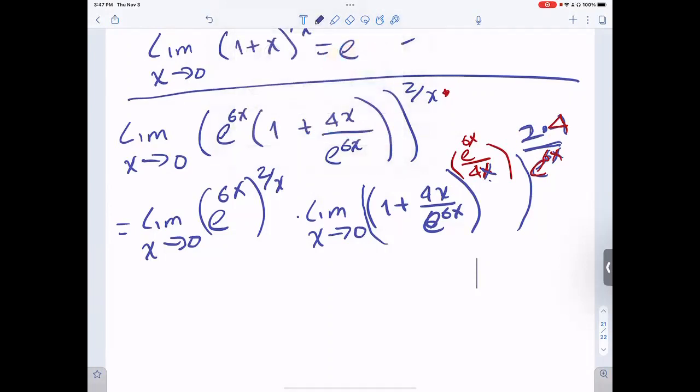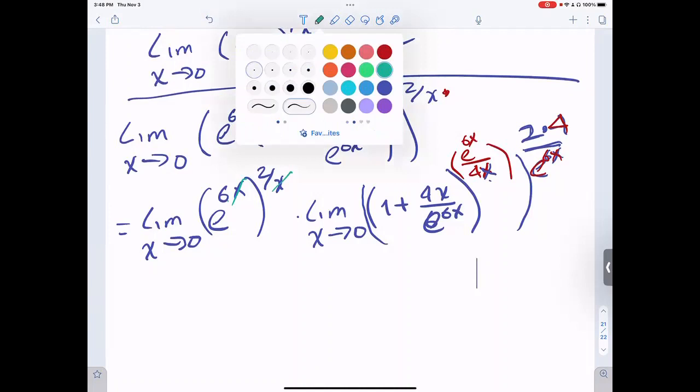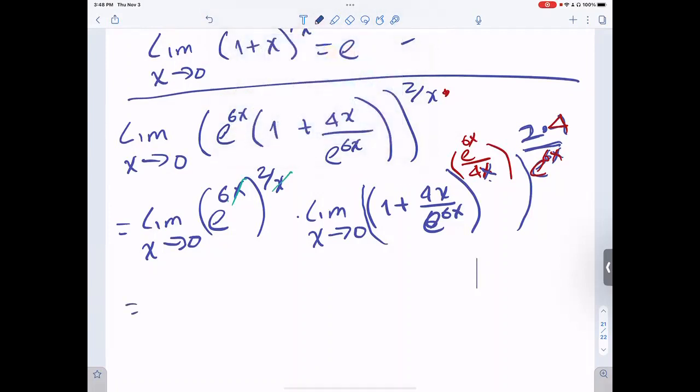This is simple. The x comes to the x, 6 and 2 is 12, and the limit of a number is a number, and then I have e to the 12 here.